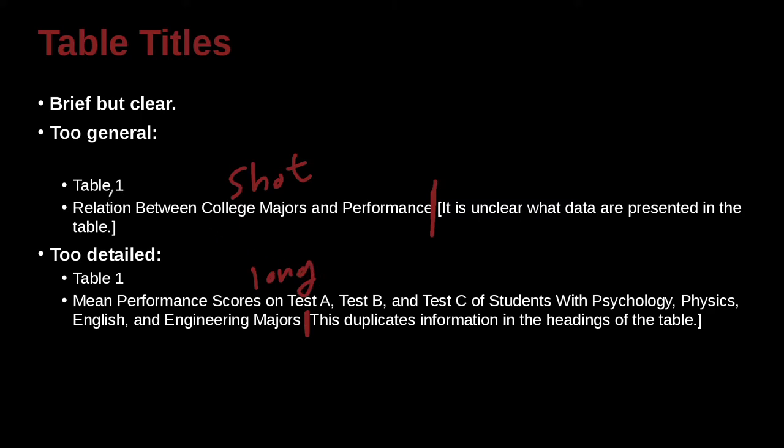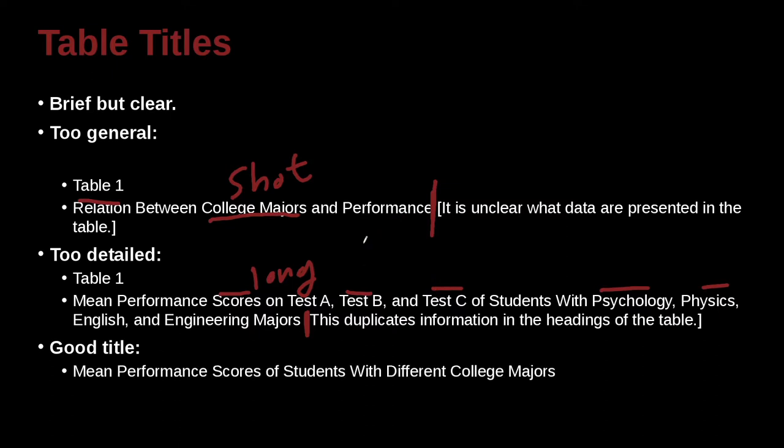The too short one is too general. It's just saying, well, I studied college majors, but this one here, it's got all the majors listed. That's too much. This one here talks about a relation, but this one down here actually tells you relation of scores between test A, test B, test C. So these are two extreme examples.